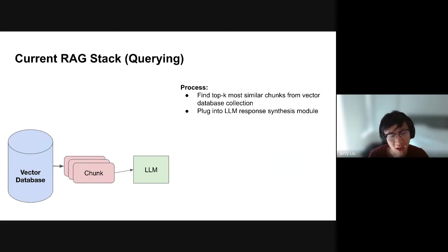When we inspect the sources of the base response, we see three Uber results and one Lyft result. Because the sources are imbalanced, sometimes the answer isn't fully correct. The language model gets confused half the time with this uneven balance.